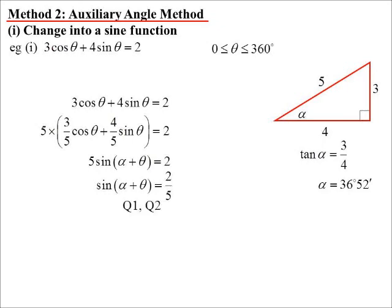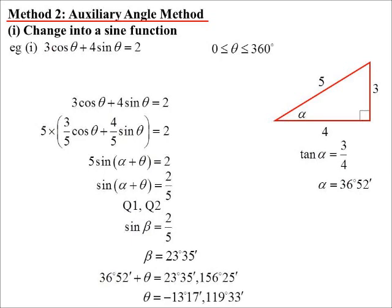Now I'm in quadrant one and quadrant two, because it's just a simple sine equals something. First, second quadrant. Let's find the acute angle, which I've called beta this time - couldn't call it alpha because I've already used it. Acute angle is 23 degrees 35 minutes. So I now know that alpha plus theta, but alpha is 36 degrees 52 minutes, is either 23 degrees 35 minutes or 156 degrees 25 minutes. So to work out theta, I've just got to subtract 36 degrees 52 minutes. So I get minus 13 degrees 17 minutes and 119 degrees 33 minutes.